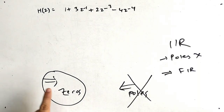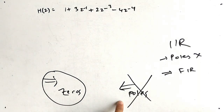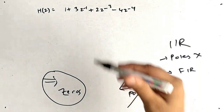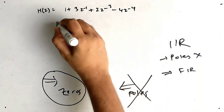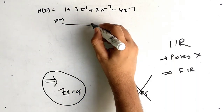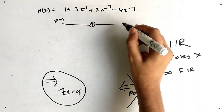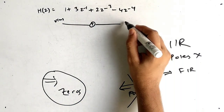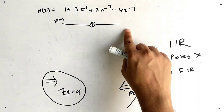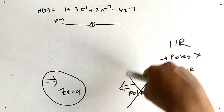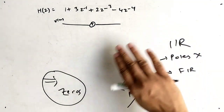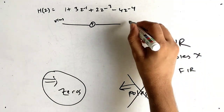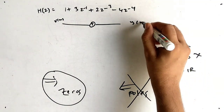In FIR we will have only zeros — we will not have poles. There will be x(n) as input. The area for the pole is removed, so there is nothing there. The output is y(n).